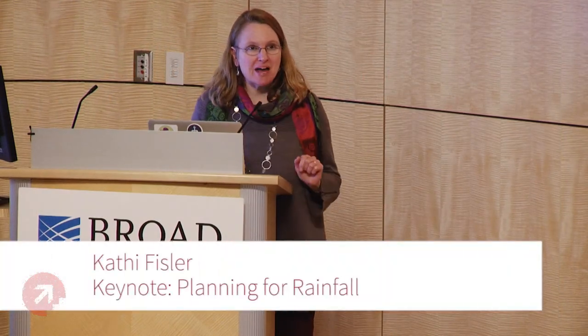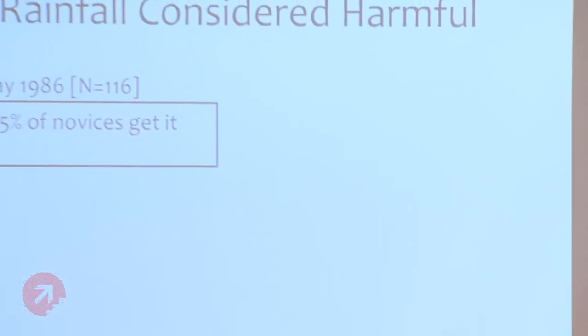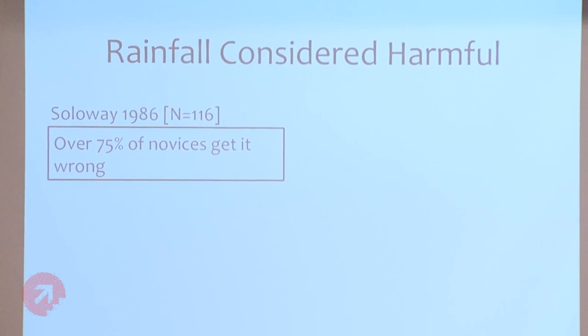Hang on to your thought of what you came up with. I'm going to come back to you in a couple of slides and ask what everybody here did. This problem is known as rainfall, and it has been studied in the computing education literature for quite some time. It was first proposed in the mid-1980s by Elliot Soloway at Yale. He wanted to see — obviously this is an easy problem, the kind of thing everybody coming out of an intro CS course should be able to do. He gave it to his freshman at Yale, and over 75% of them got it wrong.